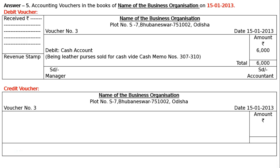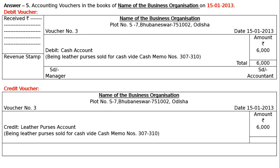Write the amount with rupee symbol. Credit will be given to Leather Purchase Account — because we don't know the exact name of the business, whether it sells purses or machines. It is better to write Leather Purchase Account. Alternatively, if the business is trading in old machines it could be Old Machinery Account. Narration: 'Being leather purchase sold for cash, vide cash memo number 307310.' Total: 6000. SD Manager on the left, SD Accountant on the right.